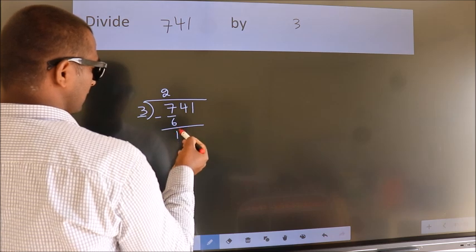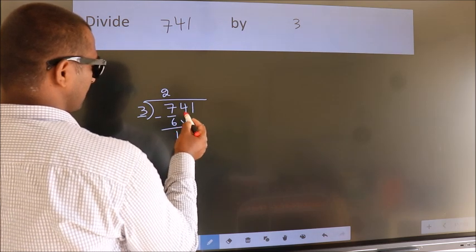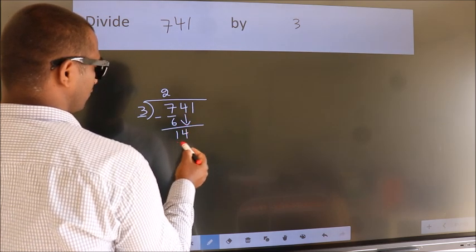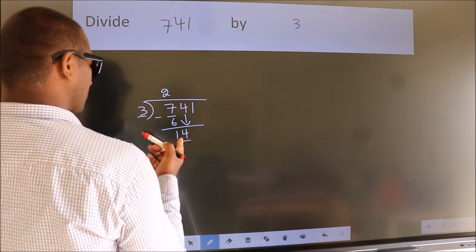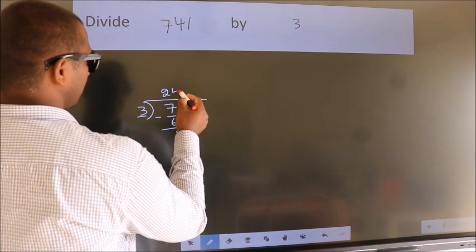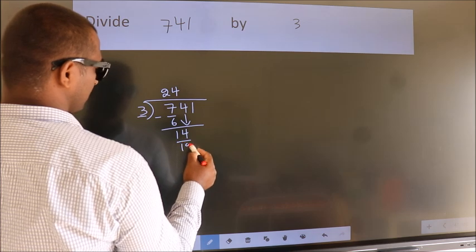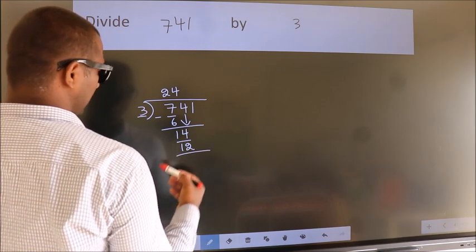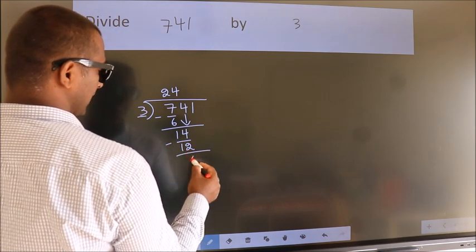After this, bring down the beside number. So 4 down. So 14. A number close to 14 in 3 table is 3 4's 12. Now we subtract. We get 2.